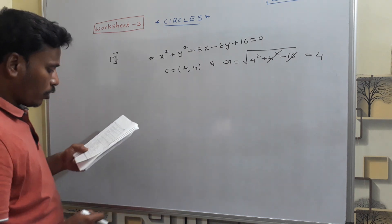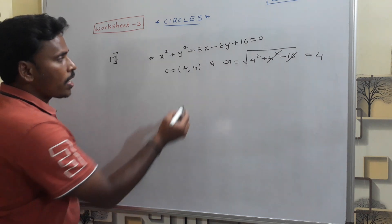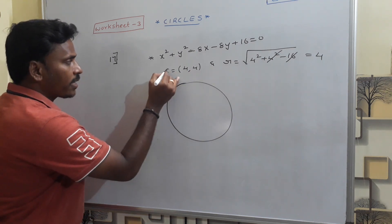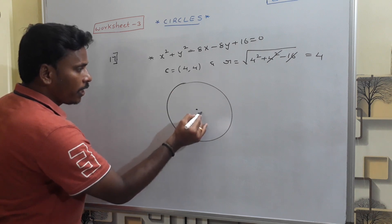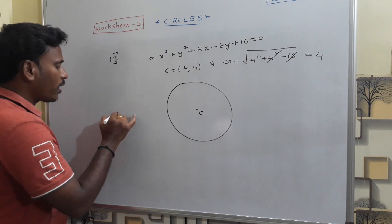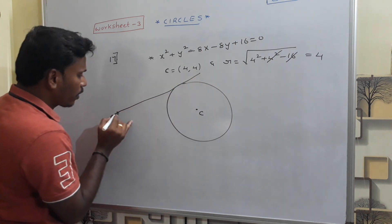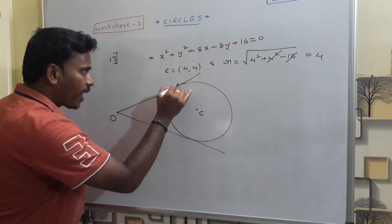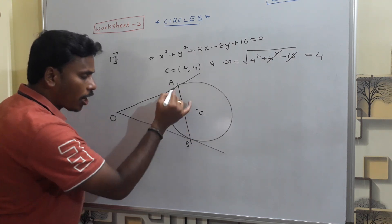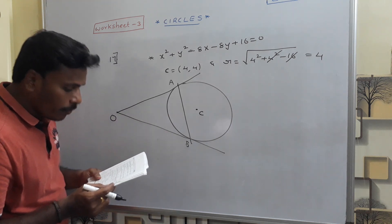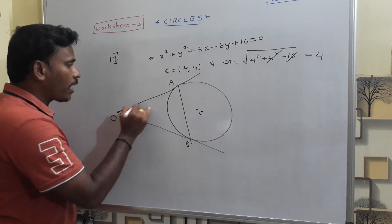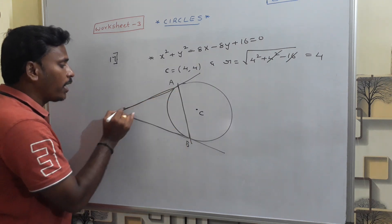The question involves the origin. Mark the center as C. The origin O is outside the circle. Two tangents are drawn from the origin to the circle, touching it at points A and B. The line AB is the chord of contact. The area of the triangle formed by the pair of tangents and the chord of contact — this triangle OAB — is what we have to find.